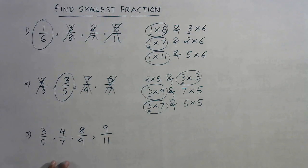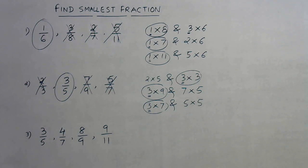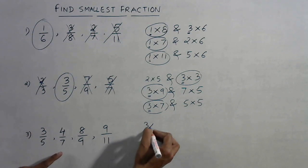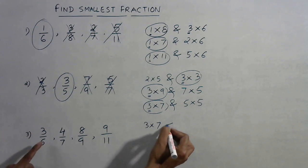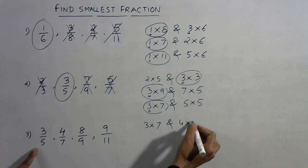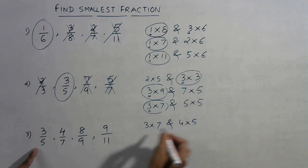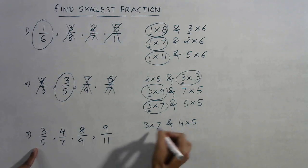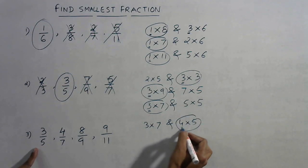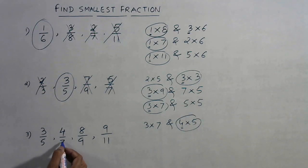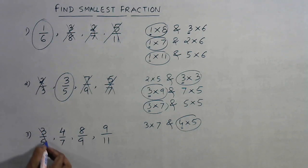You can practice yourself taking any 4, 5, or even 6 fractions and finding the smallest one. Compare the first two: 3 into 7 is 21 and 4 into 5 is 20. Since 20 is smaller, numerator 4 gives the smaller product, so this is smaller and 3/5 is discarded.